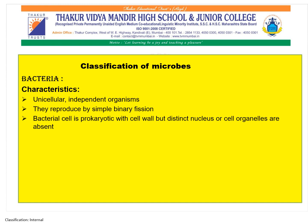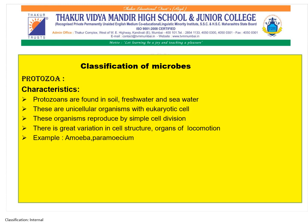Coming to the classification of microbes, the first category is bacteria. Bacteria are unicellular independent organisms that reproduce by simple binary fission. The bacterial cell is prokaryotic with a cell wall, but a distinct nucleus or cell organelles are absent.